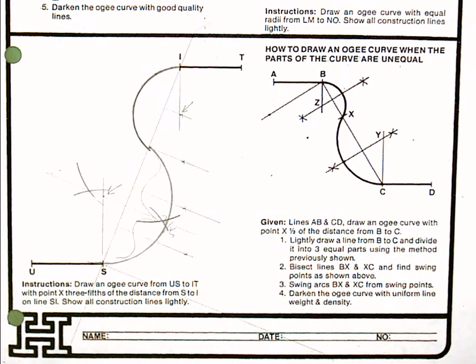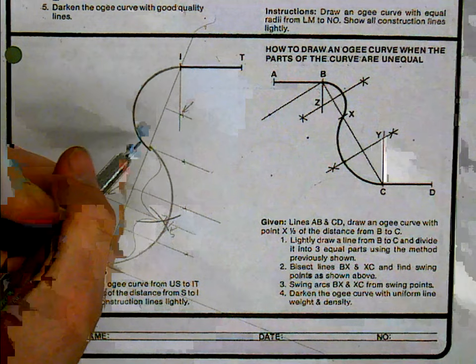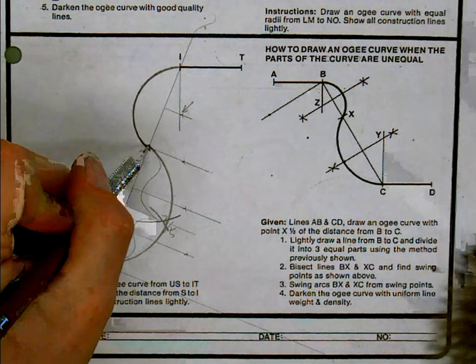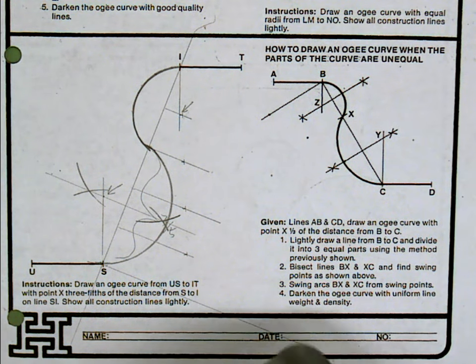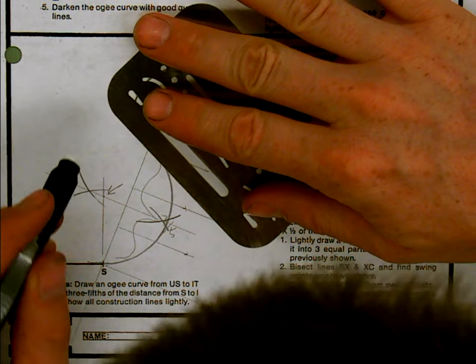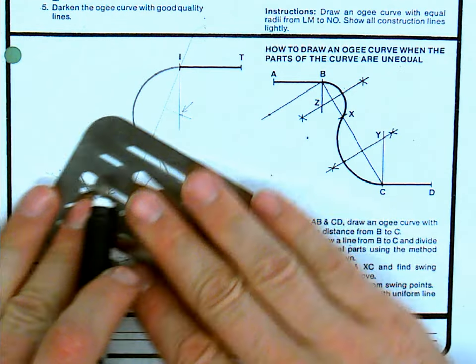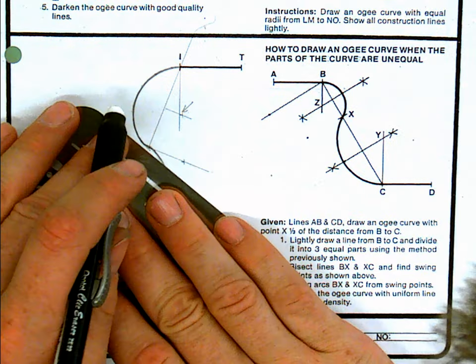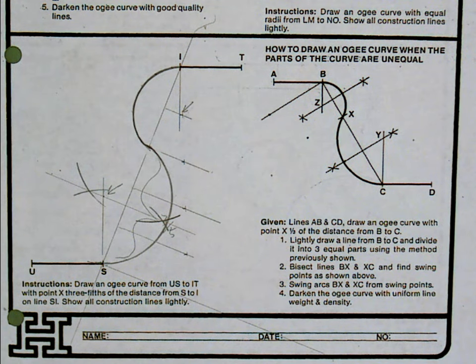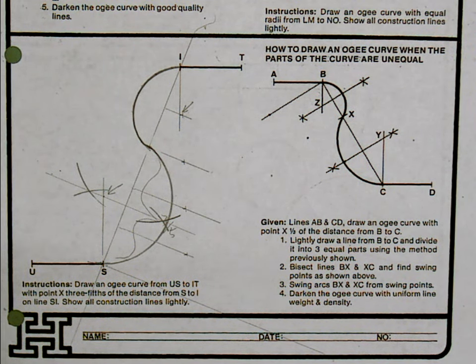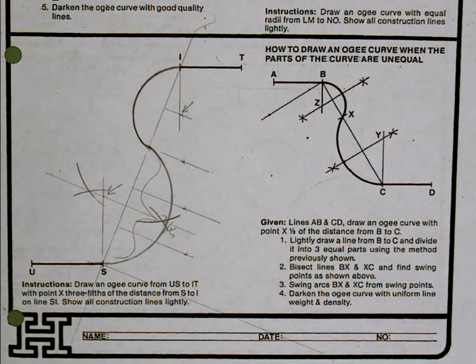All right. So that's not perfect, but it's pretty good considering all the steps you have to take to get here. So what I might do is do a little freehand correction. Take my eraser shield. Maybe hide the evidence a little bit. All right. So there you go. There's an OG curve going from three-fifths of the line segment to two-fifths of the line segment.